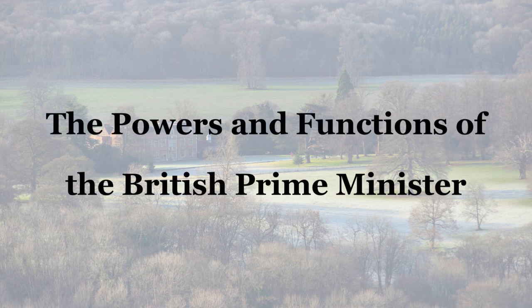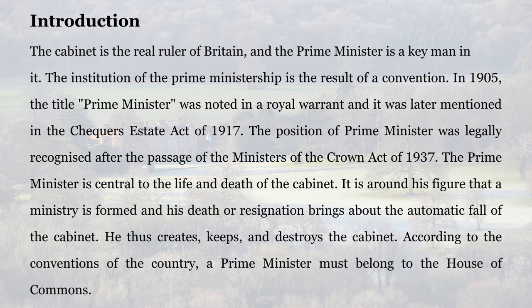The Powers and Functions of the British Prime Minister. The Cabinet is the real ruler of Britain, and the Prime Minister is a key man in it. The institution of the Prime Ministership is the result of a convention. In 1905, the title Prime Minister was noted in a royal warrant and it was later mentioned in the State Act of 1917. The position of Prime Minister was legally recognized after the passage of the Ministers of the Crown Act of 1937.